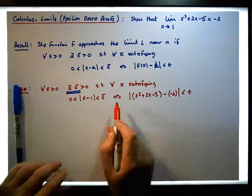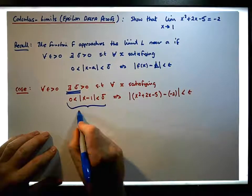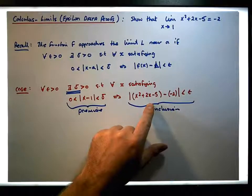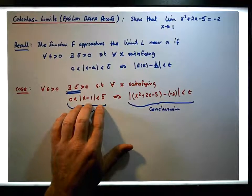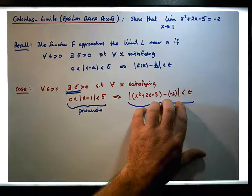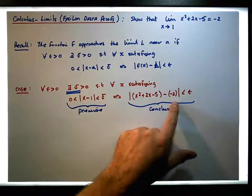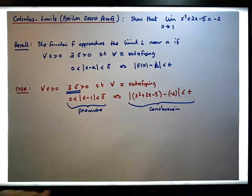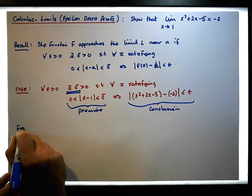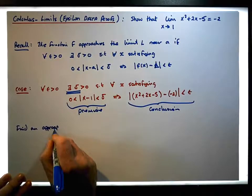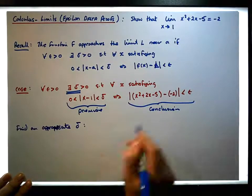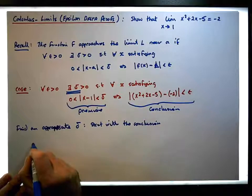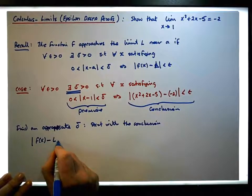What we're going to do is start with the conclusion of this implication — recall that the premise is |x minus 1| less than delta, and the conclusion is |f(x) minus L| less than epsilon. We'll look at the conclusion and use deductive logic to find an appropriate delta, working back to something that looks like |x minus 1|.